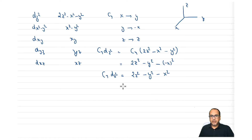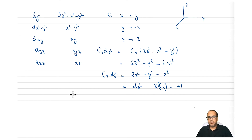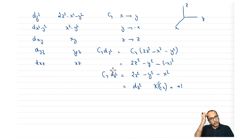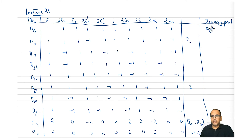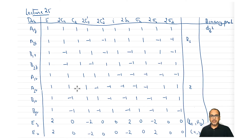C4 applied to d_z² gives d_z², meaning the character under C4 is +1. Similarly, we can find the characters under C2, C2', and C2'' using the same rules, and find out which IR representation d_z² forms a basis for. It turns out d_z² is totally symmetric, lying in the totally symmetric representation. You can find other d-orbitals similarly. Now that all areas of the character table are clear, we move to the next topic: representation of cyclic groups.